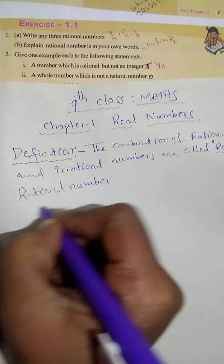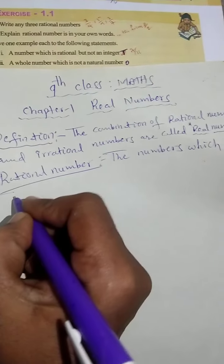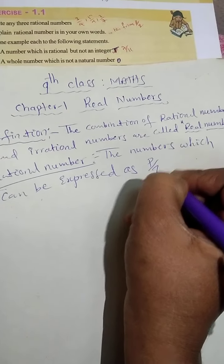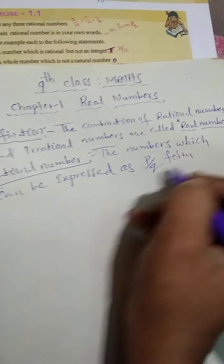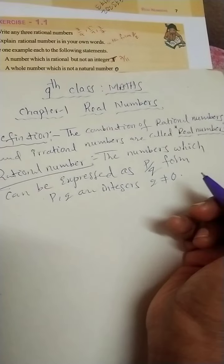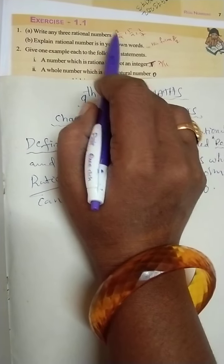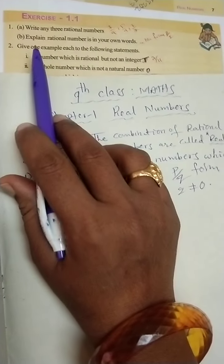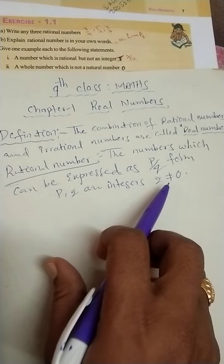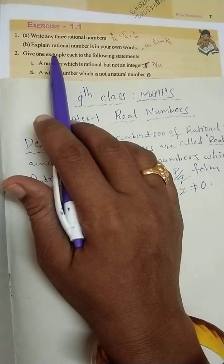The rational number definition is very simple: the numbers which can be expressed as p by q form, where p and q are integers and q is not equal to zero. If you know the definition, you can easily write the example. Next: explain rational numbers in your own words - the numbers which we can express in the form of p by q, where p and q are integers and q is not equal to zero.